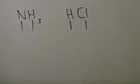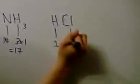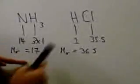This is because the gases diffuse and the ammonia gas diffuses more quickly. The relative formula mass of ammonia is 17, whereas the RFM of hydrogen chloride is 36.5. This shows lighter particles diffuse more quickly than heavier ones.